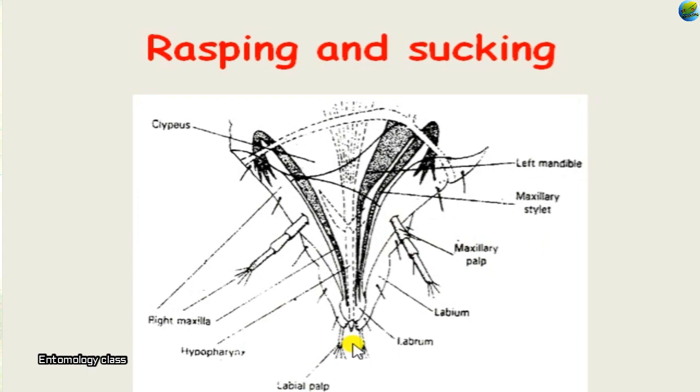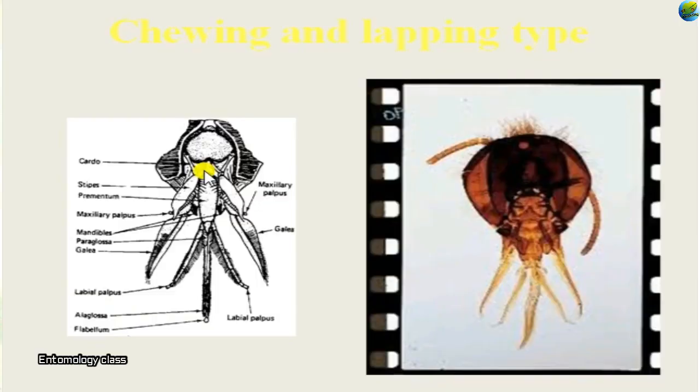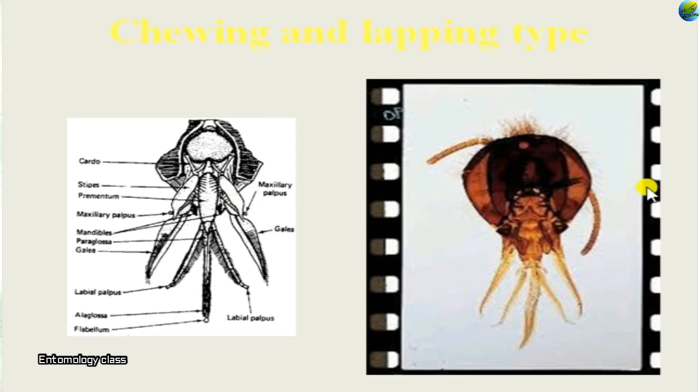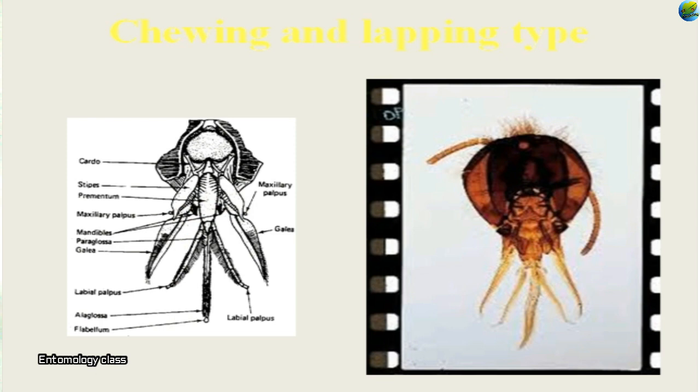So far we have seen both kinds of mouthparts: the mandibulate type where the insect chews the food, and the Haustellate type where the insect sucks sap from the plant. Another kind is a hybrid of both — the chewing and lapping mouthpart present in honey bees. They have both a labrum and mandible like the chewing mouthpart, but the mandible is not very hard — it is somewhat rudimentary, useful for shaping wax and constructing the comb.